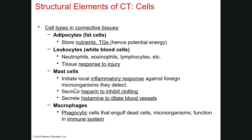Mast cells also secrete heparin, which helps inhibit blood clotting. Once a blood clot has formed, you need to stop the process so it doesn't get out of control — that's the role of heparin from mast cells. Macrophages are phagocytic cells that engulf things — microorganisms, debris, dead cells — as part of the immune system. All of these cell types are found in connective tissue.